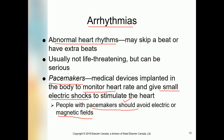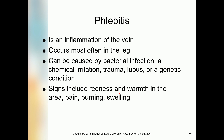Phlebitis is the inflammation of a vein, occurring most often in the legs — for example, when traveling by airplane. It can be caused by bacterial infection, chemical irritation, trauma, lupus, or genetic conditions. Signs and symptoms include redness, warmth, pain, burning, and swelling in the affected area.